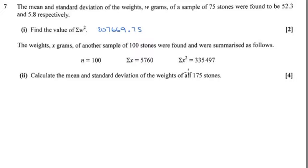Okay, part two for four marks adds in another set of 100 numbers. It says the sum of those numbers is 5760 and the sum of the squares is this value here. It wants us to group those two sets of numbers together to get the mean and standard deviation of all 175 stones.